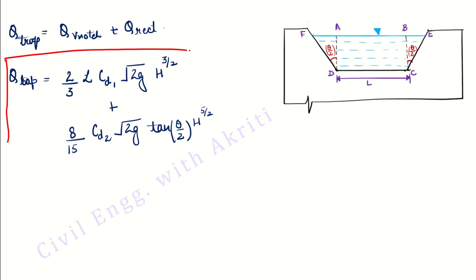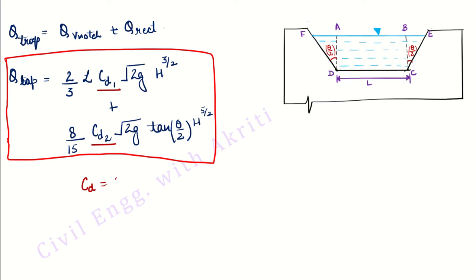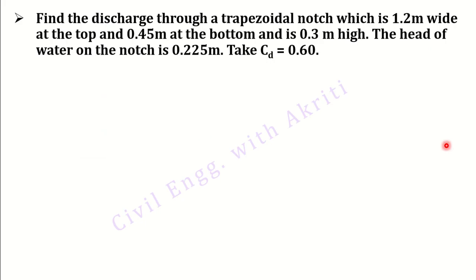It is simple — you just sum the discharges of the triangular notch and the rectangular notch. One important thing to note: here we have Cd1 and Cd2. If only one Cd value is given, then we take Cd1 equal to Cd2 equal to that Cd. If separate values are given, use them separately; if only one value is given, use the same value for both.